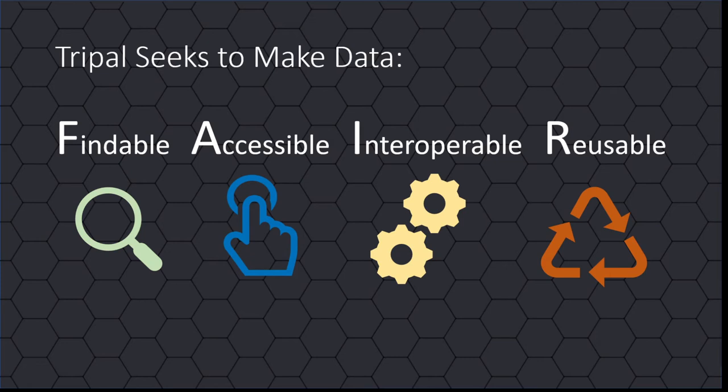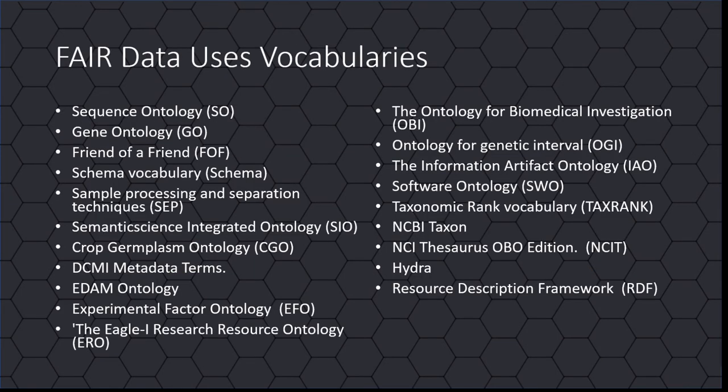Recent efforts in design of TRIPLE infrastructure are to make data FAIR: findable, accessible, interoperable and reusable. A key strategy underlying FAIR data is the use of controlled vocabularies and ontologies. Every bit of data in a TRIPLE site is associated with a controlled vocabulary term, which helps reduce the ambiguity of data, making it more accessible and interoperable.